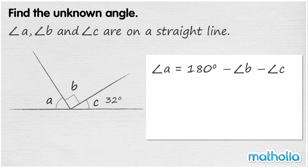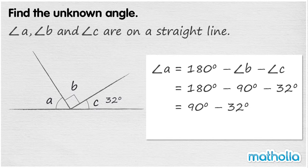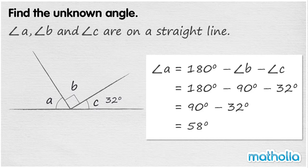Angle B is a right angle. Right angles are 90 degrees. Angle C is 32 degrees. So angle A equals 180 degrees minus 90 degrees minus 32 degrees. 180 degrees minus 90 degrees equals 90 degrees. 90 degrees minus 32 degrees equals 58 degrees. So angle A is equal to 58 degrees.